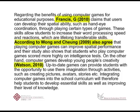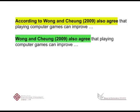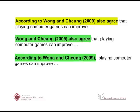Let's look at the next citation. Gigi wants to quote two authors, Wong and Cheung, using 'according to.' But then she adds the words 'also agree' as well, which is wrong. She can either write 'Wong and Cheung also agree,' or 'according to Wong and Cheung,' but not both.